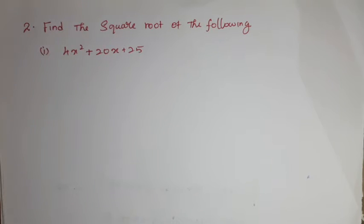So NCERT textbook exercise 3.7. Let's begin. Find the square root of the following: 4x² + 20x + 25. You already know some methods.